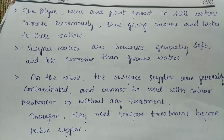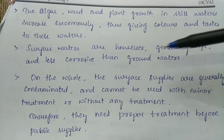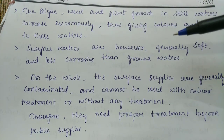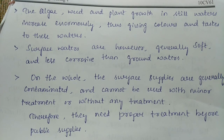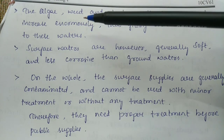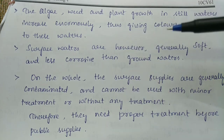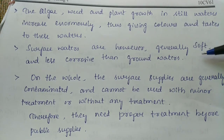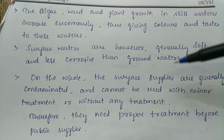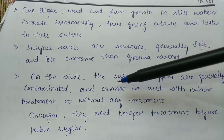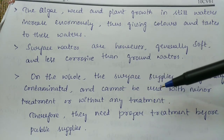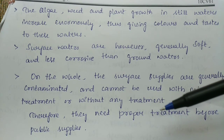Algae, weed, and plant growth in still waters increases enormously, giving color and taste to the water. Color and taste are always undesirable — pure water is colorless and has no particular taste. This condition prevails mainly in lakes and ponds. Surface waters are however generally soft and less corrosive than groundwater because of the presence of less dissolved inorganic salts. On the whole, surface supplies are generally contaminated and cannot be used without proper treatment.